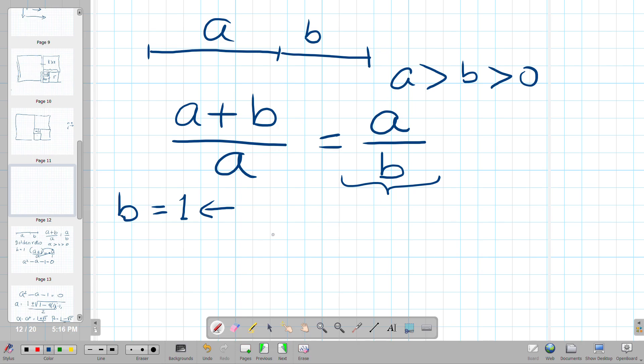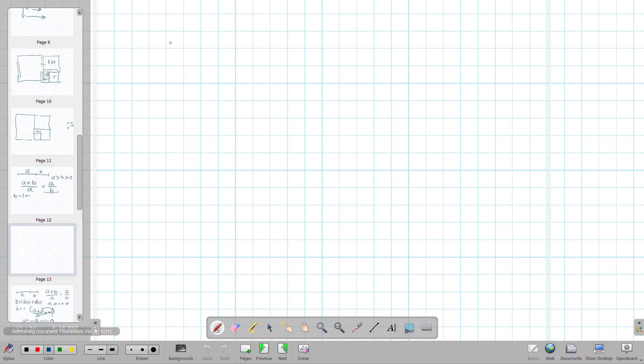Now when this is done, what you get is, let me start another page. All right, so you start with A plus B over A is equal to A over B. B equals one, so you're down to A plus one over A is equal to A.